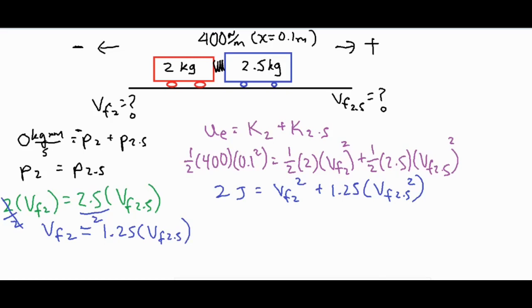Let's go ahead and do a substitution. Now that we know the vf2 is 1.25 of the vf2.5, we can take this and drop it in there. That leaves us with two joules on this side still, then we're going to have 1.56 which is a rounded value times vf2.5 squared.